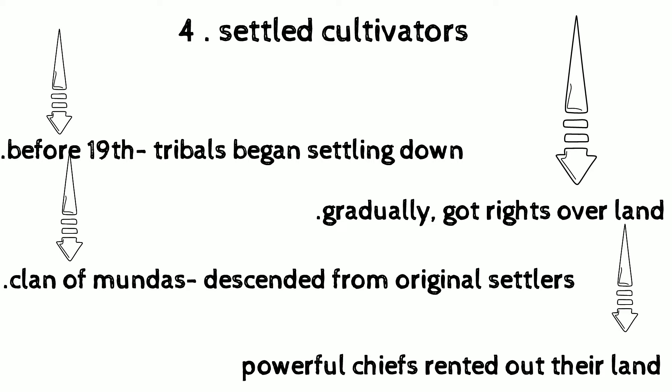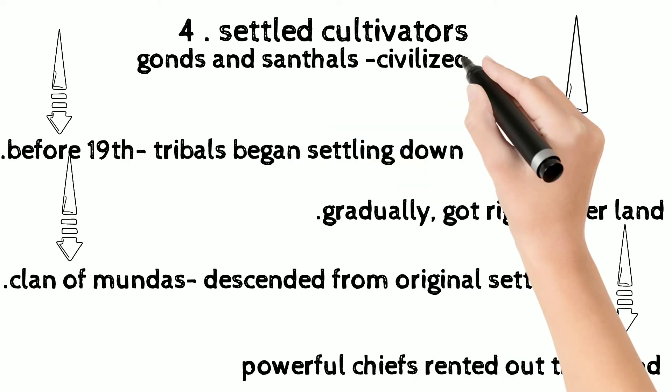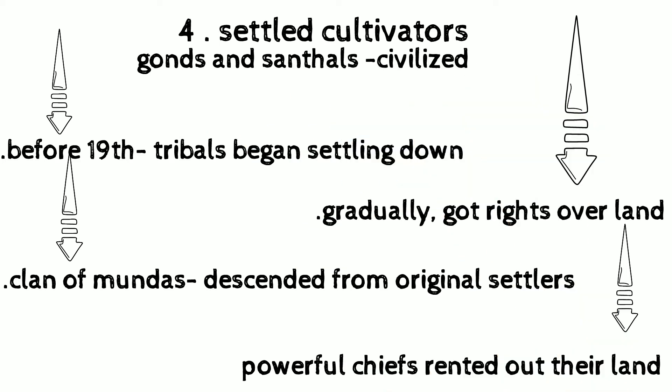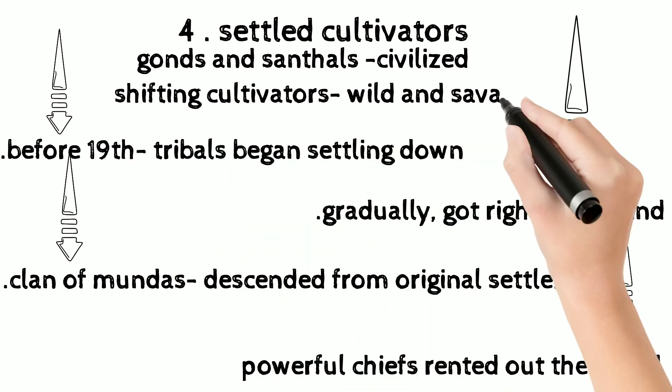As time passed, some of them became powerful chiefs and rented out their land to peasants for cultivation. The British considered groups like the Gonds and Santhals as civilized because they were settled at one place, but shifting cultivators like herders or hunters and gatherers were considered wild and savage — meaning backward.